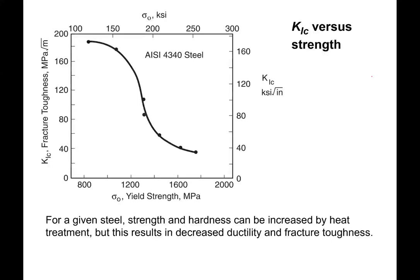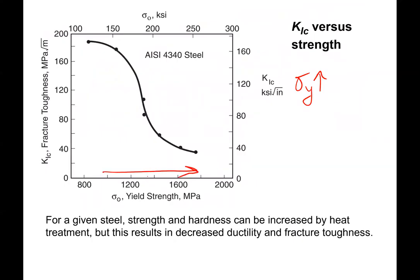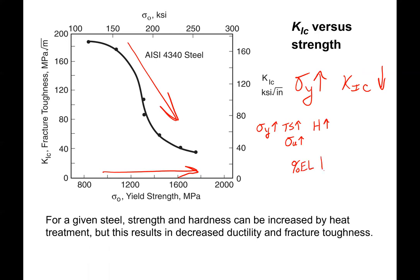The final take-home message is that as yield strength increases, fracture toughness goes down. As yield strength and tensile strength go up, hardness goes up, but ductility drops — and now we also see that fracture toughness drops. There's always a trade-off with increasing the strength and hardness of a material. Next time we'll get into fatigue and then creep failure to finish up chapter eight.